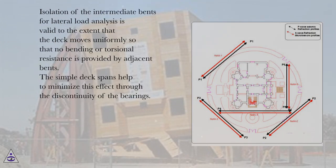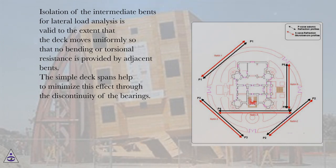Isolation of the intermediate bents for lateral load analysis is valid to the extent that the deck moves uniformly, so that no bending or torsional resistance is provided by adjacent bents. The simple deck spans help to minimize this effect through the discontinuity of the bearings.